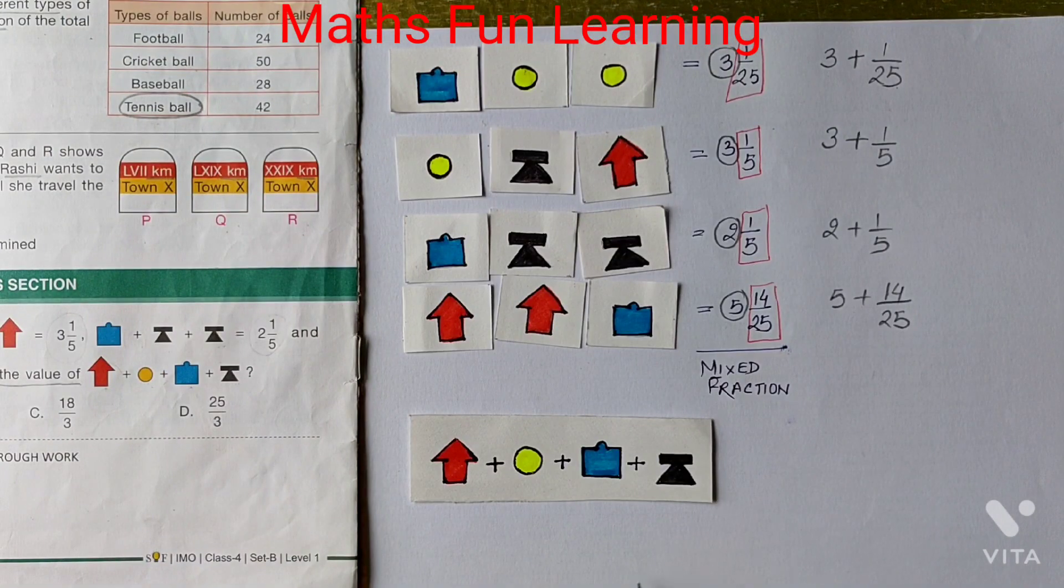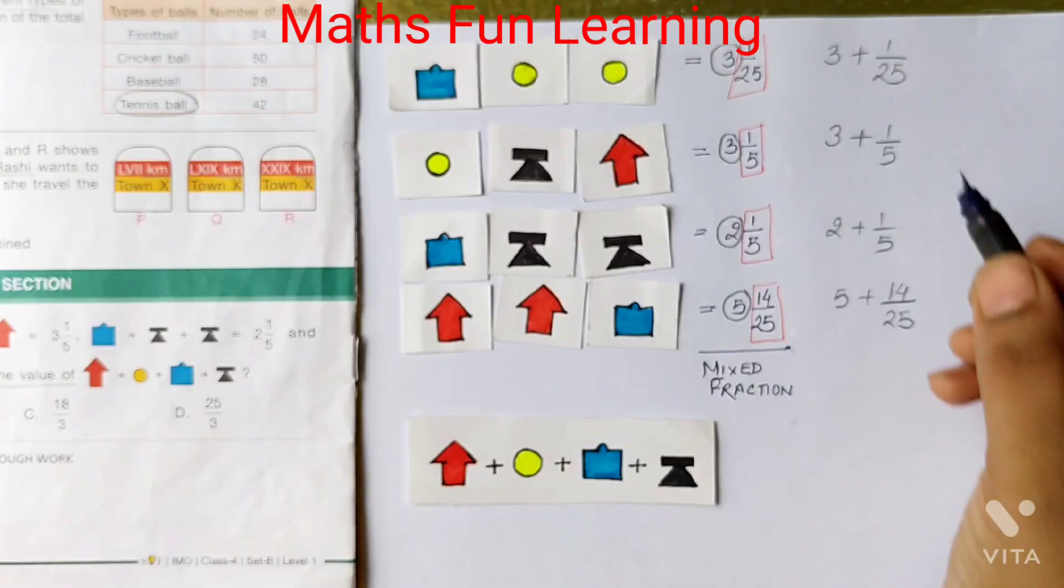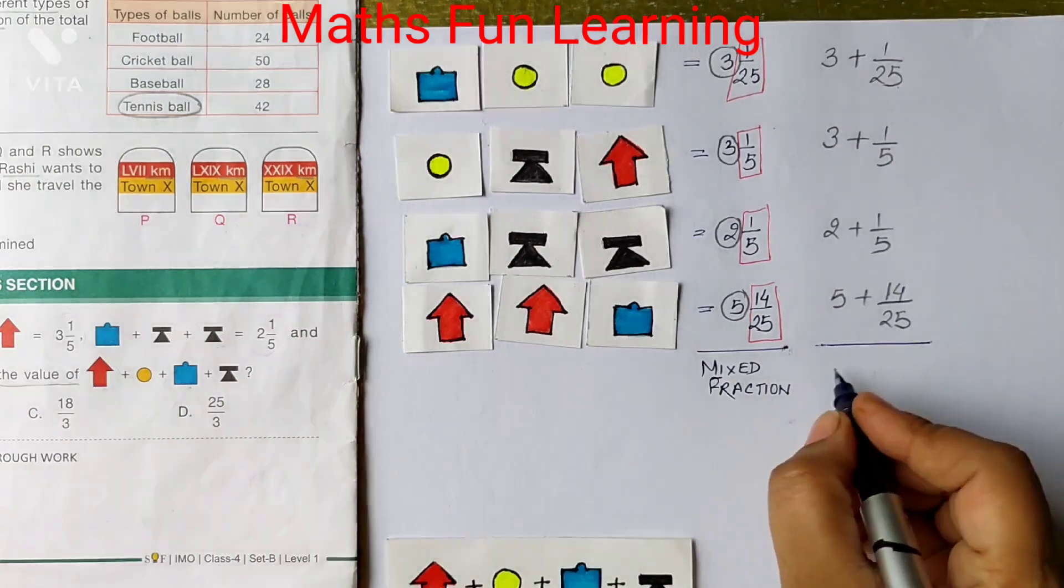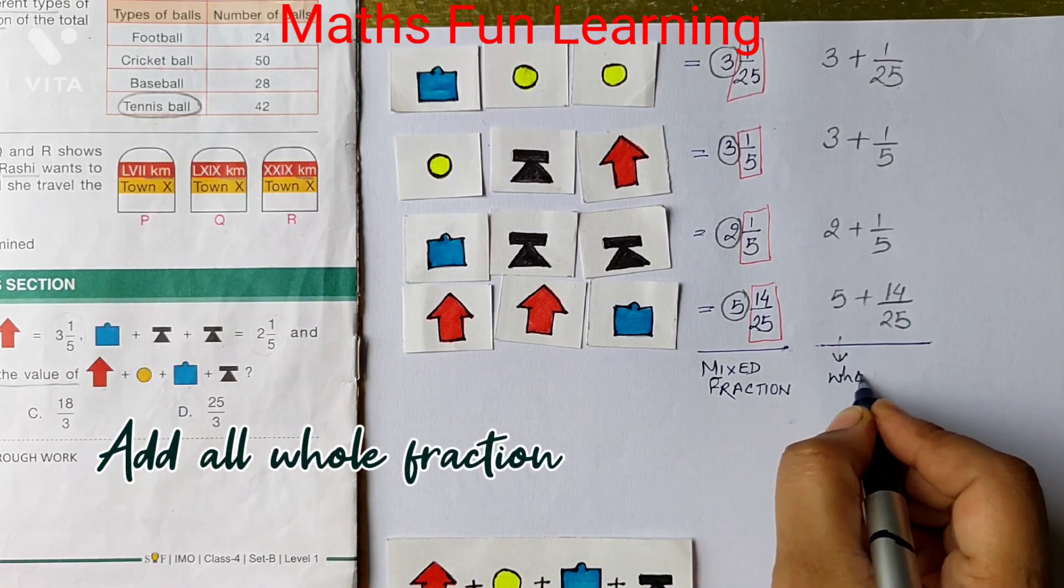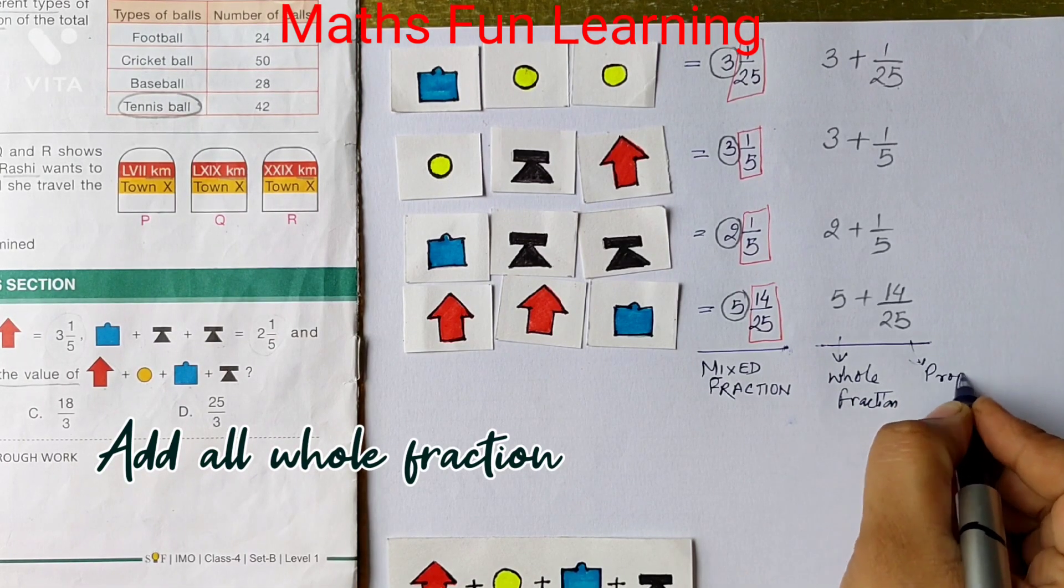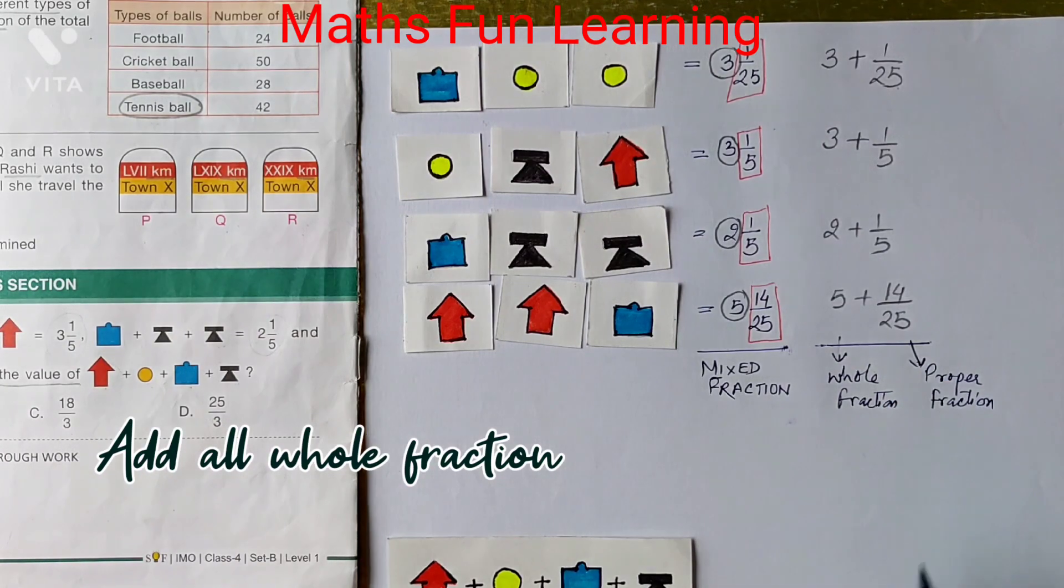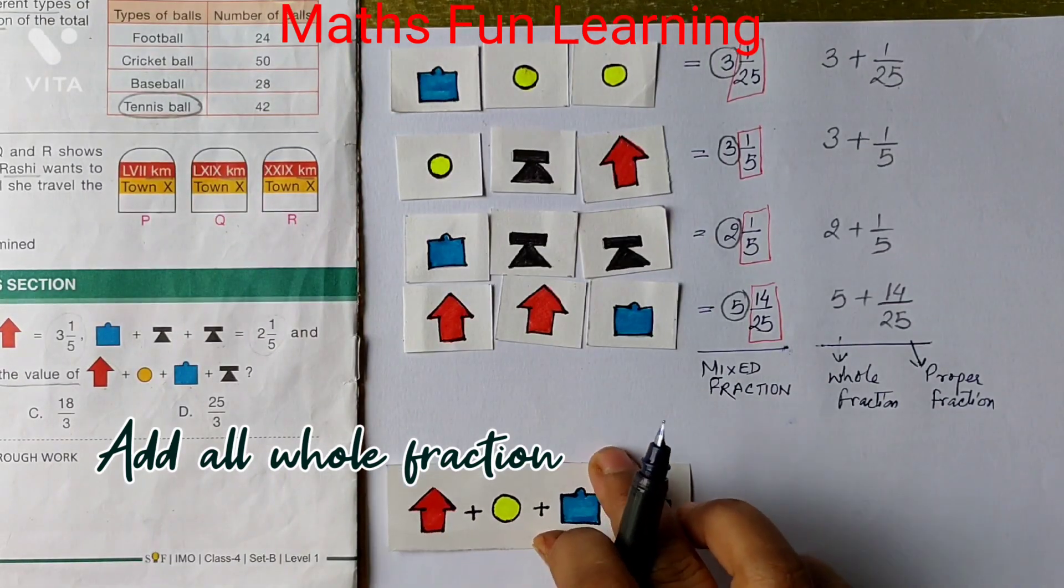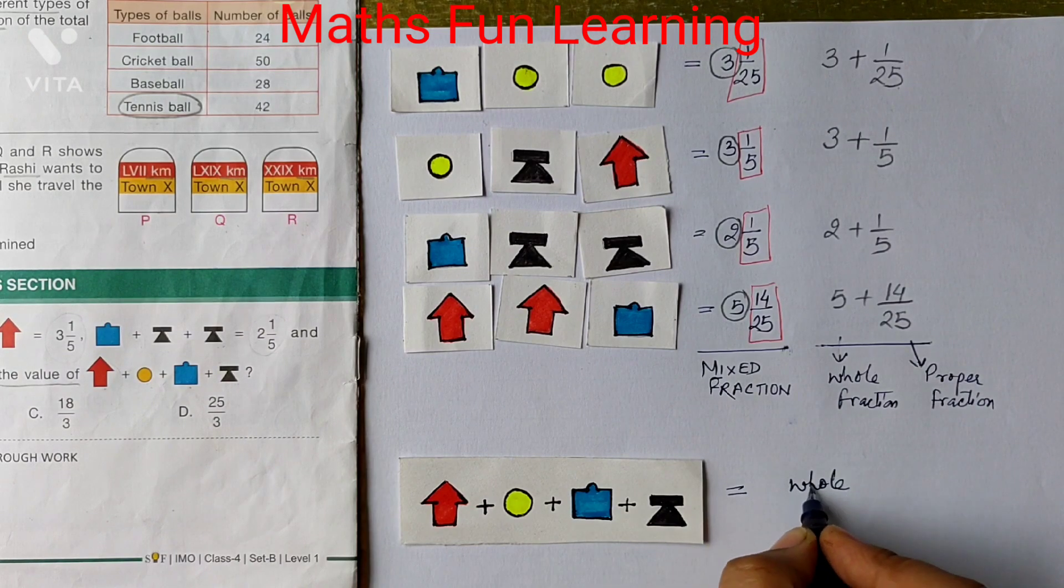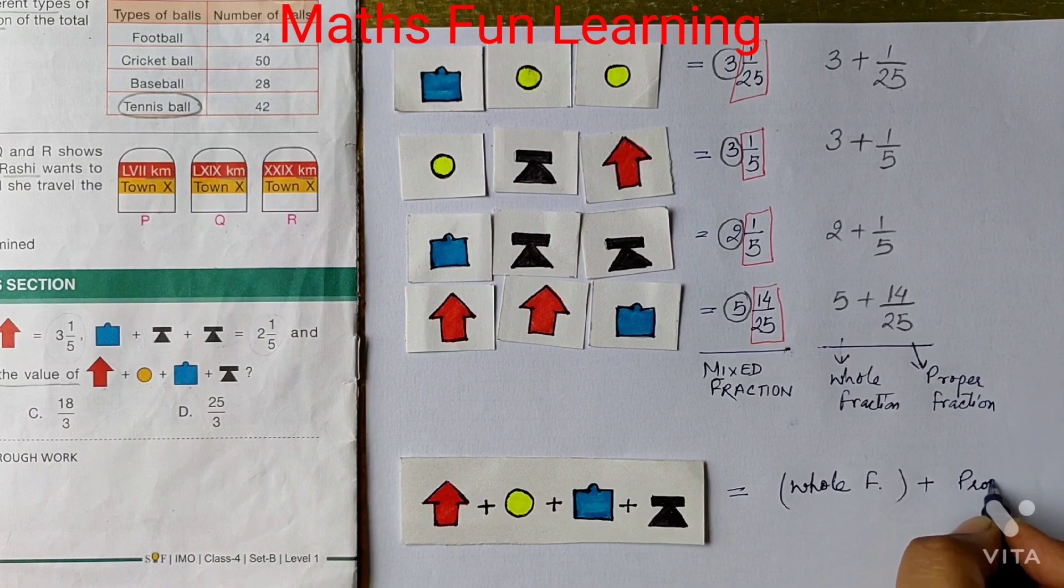So here you saw that whole plus proper fraction, we have to add it. If you add whole fraction, what is your answer? So let me just write down. These are called whole fractions, and these are called proper fractions. So what you can do first, we have to find out the aggregate. So first, which is equal to add all the whole fractions here. So I will just write down whole fraction plus proper fraction.